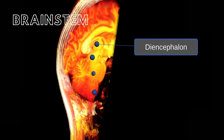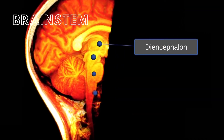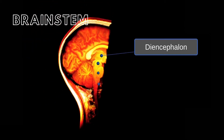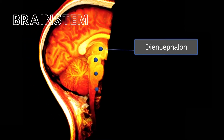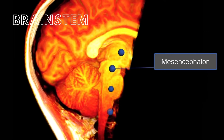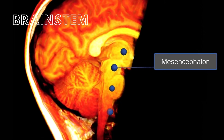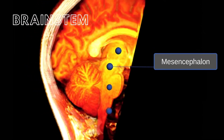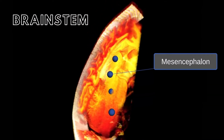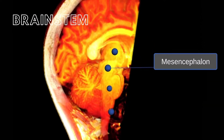The diencephalon connects the brain stem to the cerebrum, and almost all of the sensory and motor information of the CNS synapses within here. The mesencephalon, also known as the midbrain, contains the motor nuclei of the reticular formation and the sensory nuclei that process auditory and visual stimuli.